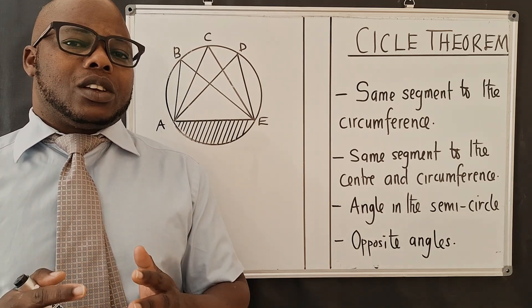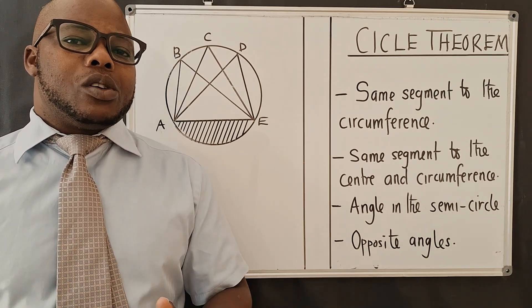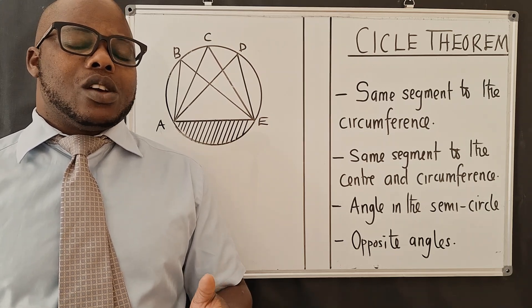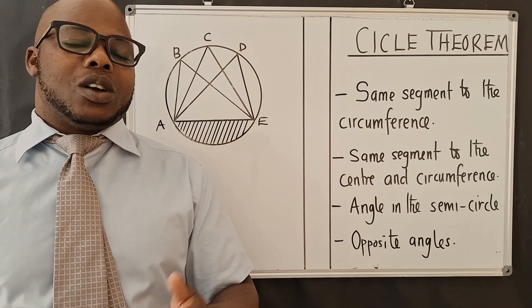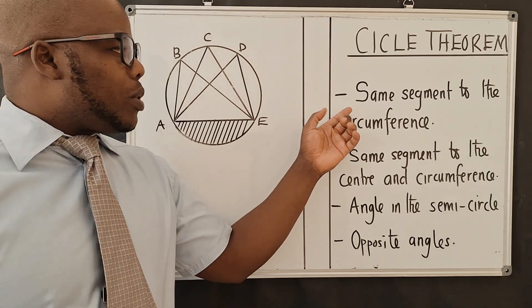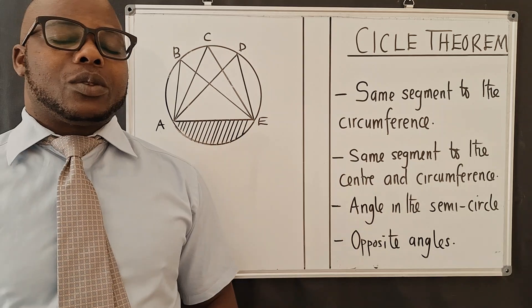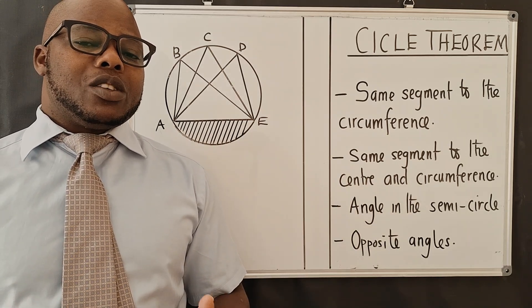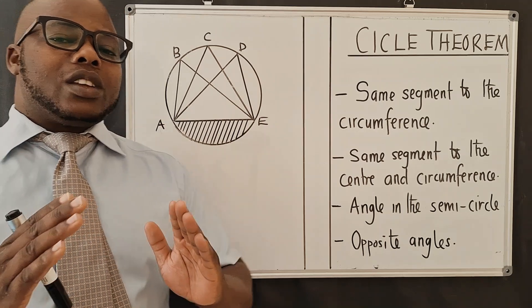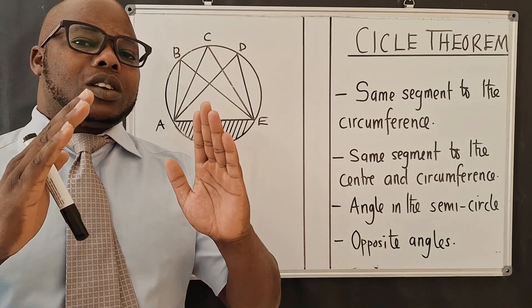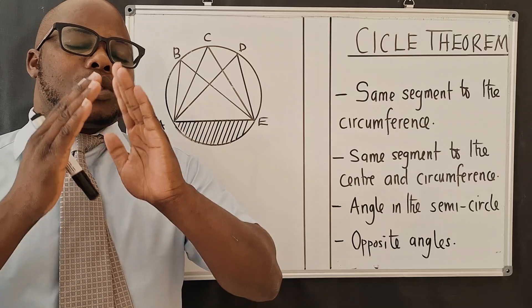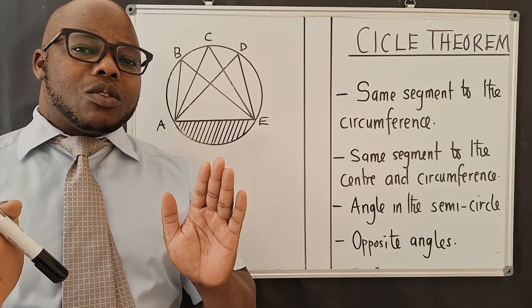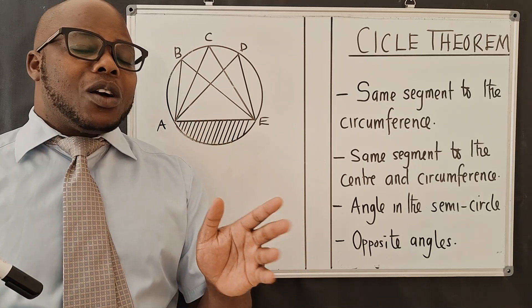The first property is very simple and it's there in most exam questions — they ask you and it will just give you a mark. The first property is that same segment to the circumference. What it means is: when you've got angles that are coming from the same segment and they touch the circumference, they are equal to each other. You don't need to do any calculation — you just write that angle. That's your answer.